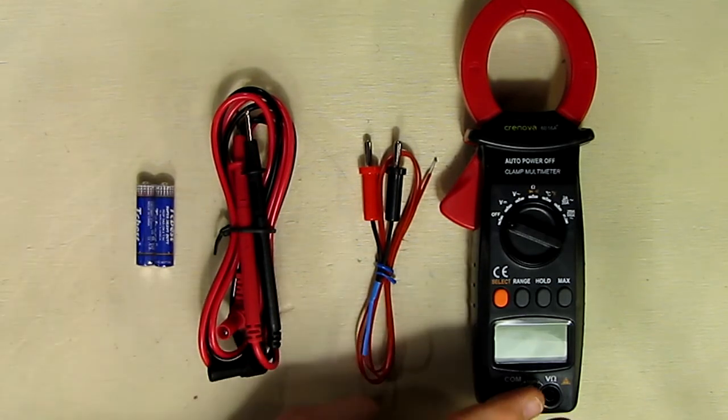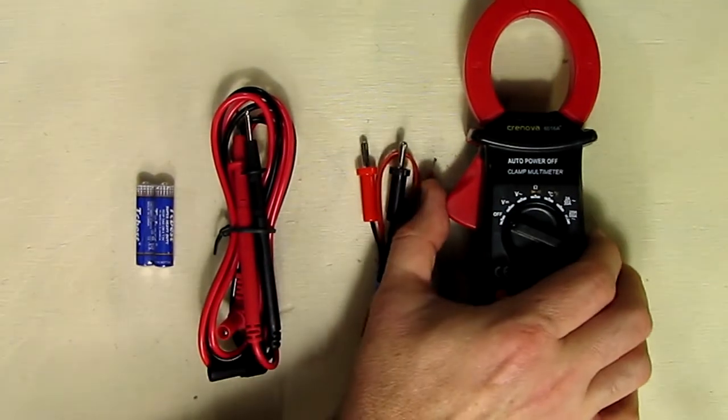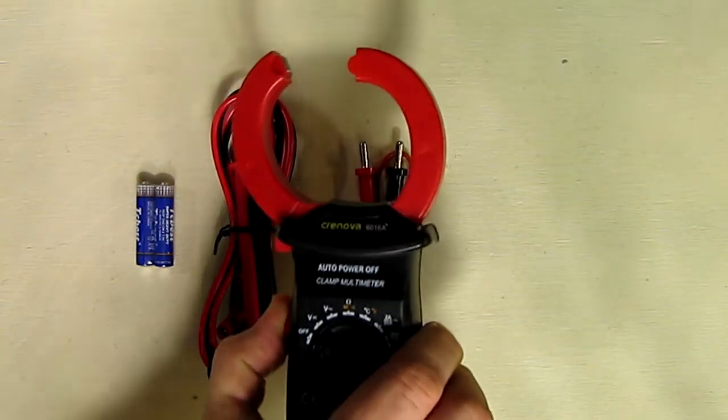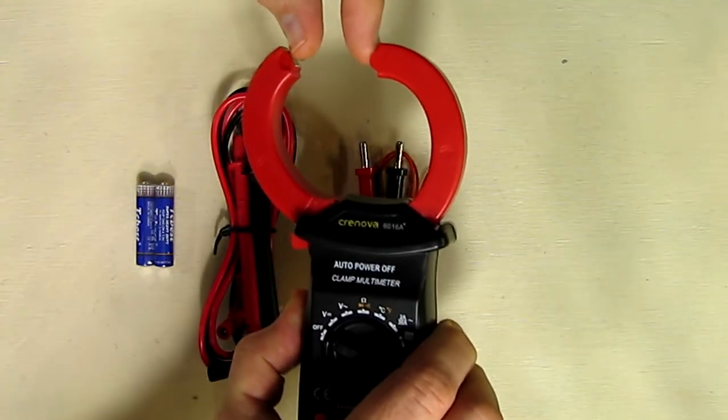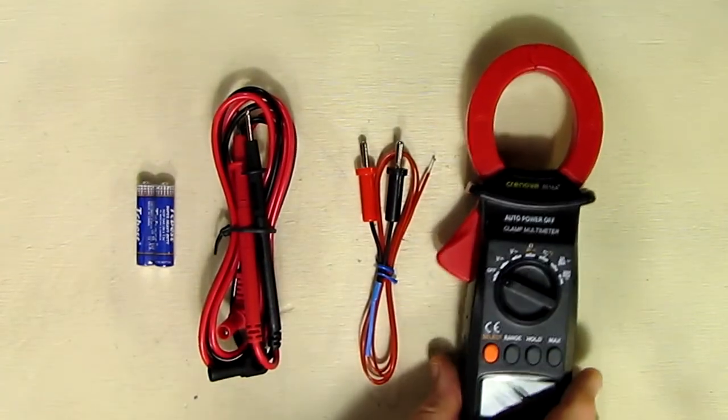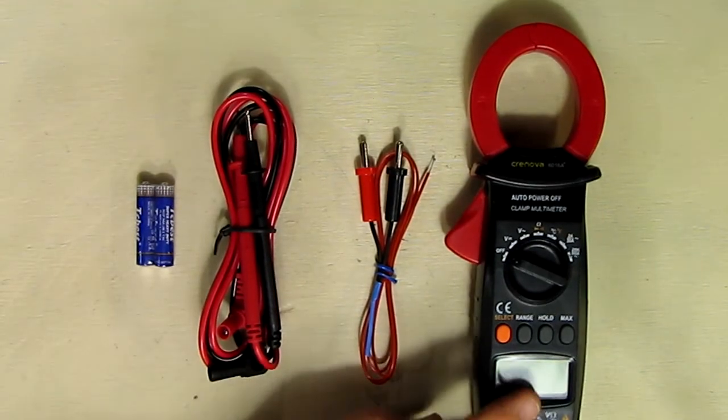In general, it has auto ranging and it's a clamp multimeter. As you can see, you can open it up to 30 millimeters wide for the thickness of your conductor and it will measure AC current through there up to 600 amps.